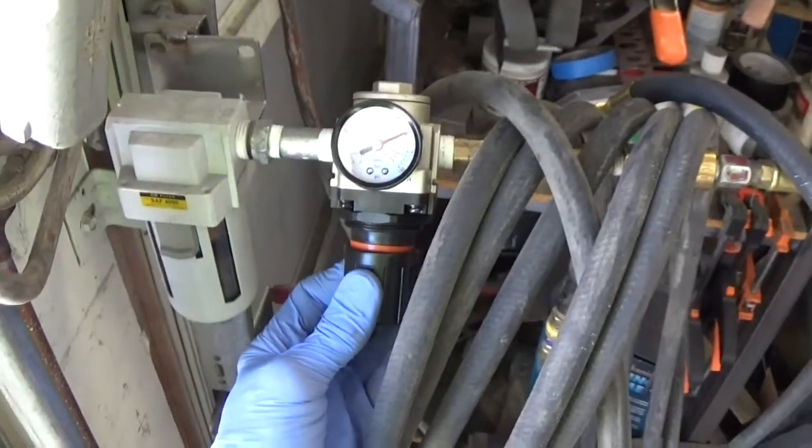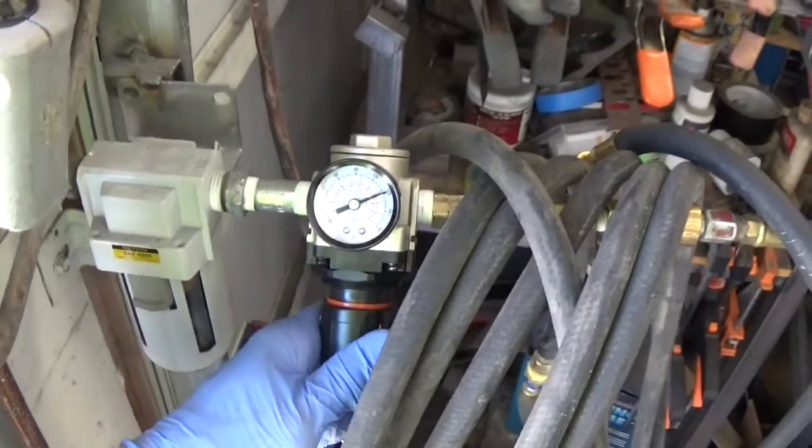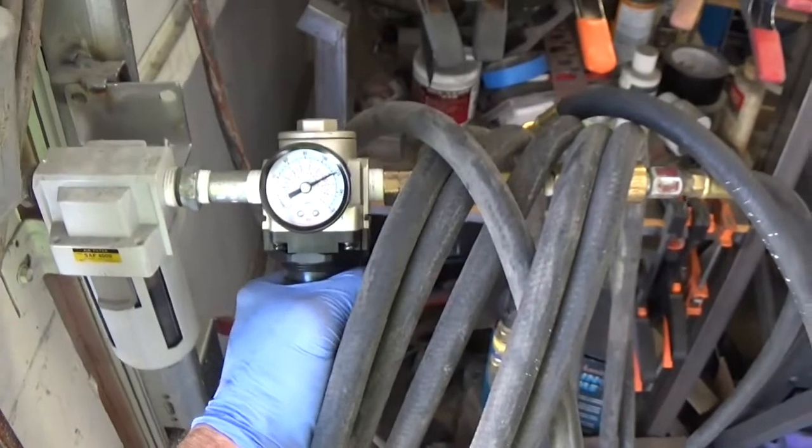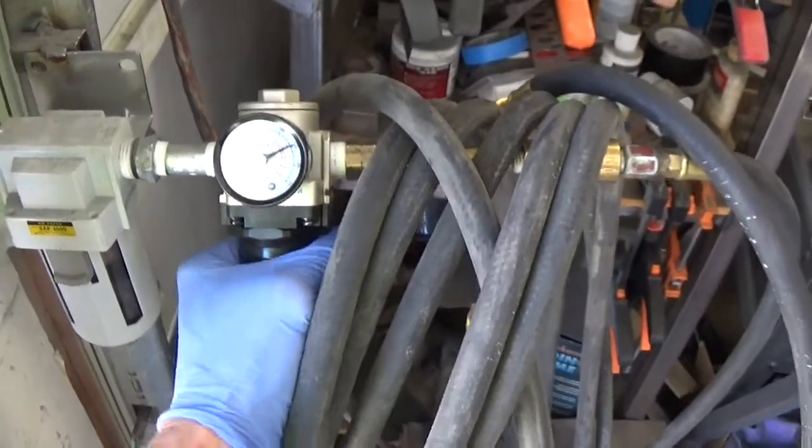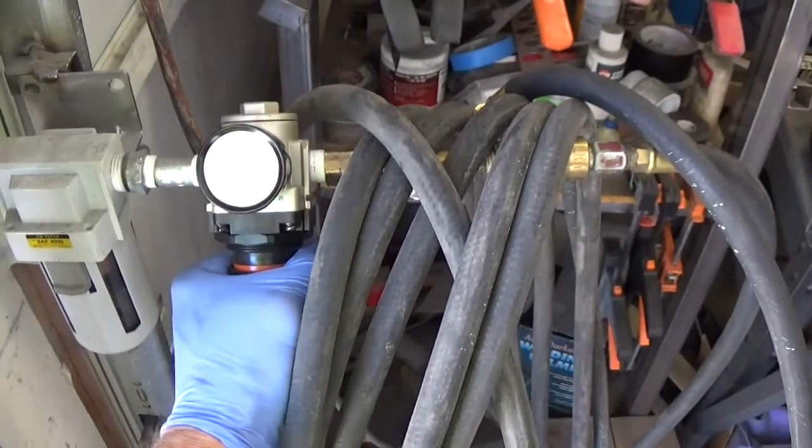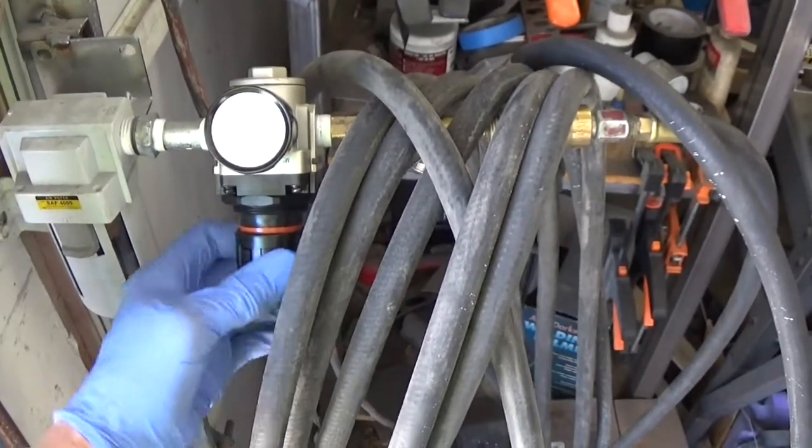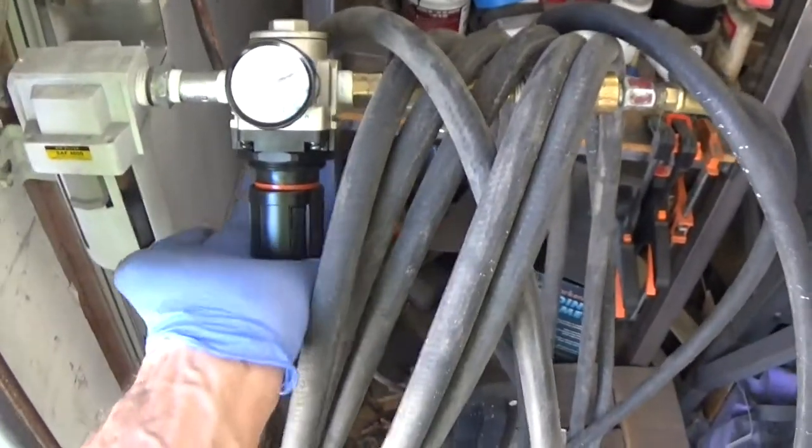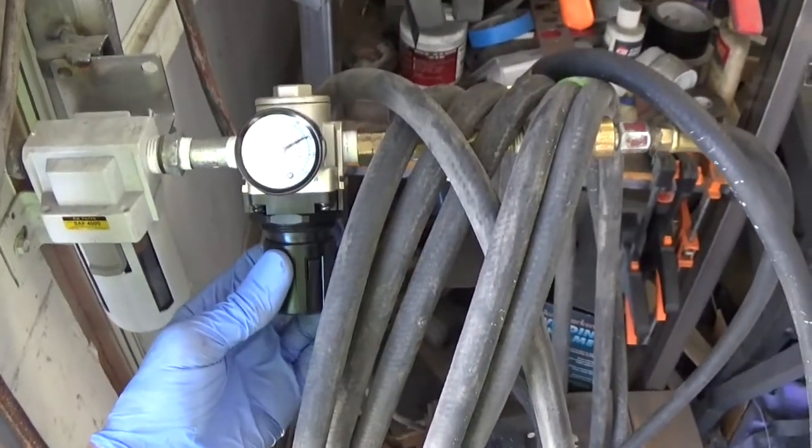And the way you set it is you push this thing in and then you crank it to the right. Oh, I had it set already. So you pull it out, crank it to the right if you want to increase the pressure, and then lock it in to where you want it.